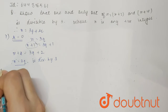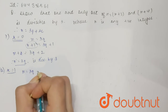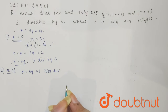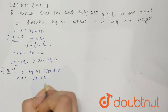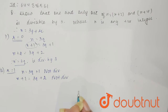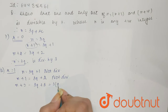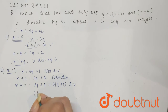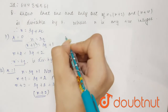Now consider the case when r is equal to 1. Then n will be equal to 3q plus 1, which also leaves a remainder of 1, so n is not divisible by 3. Now n plus 1 will be 3q plus 2, and the remainder is 2, so this is also not divisible. Now n plus 2 will be 3q plus 3, which we can factor as 3 into (q plus 1), meaning this is divisible by 3. So in this case, only n plus 2 is divisible by 3.